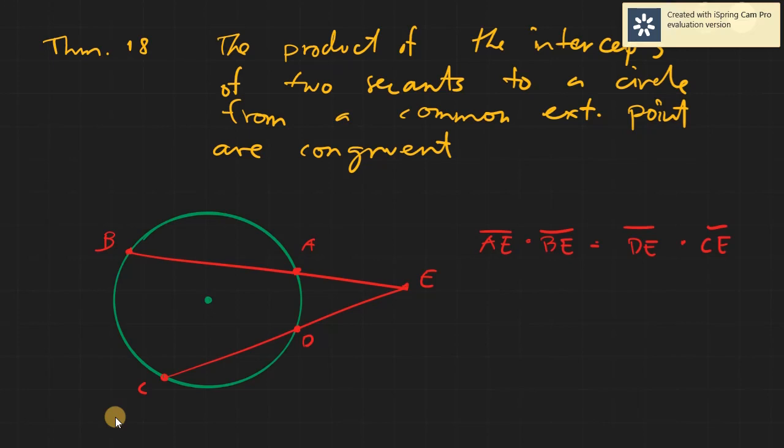So firstly, again, secants are lines intersecting the circle at two points only. It's just like having a circle and then you have a straight line here. This is a secant because it will intersect the circle at two points only. And that would be the maximum number of intersections on a circle when you have a line.